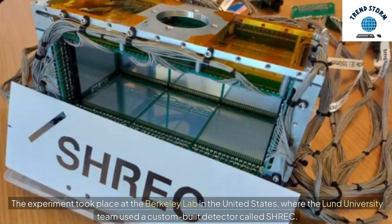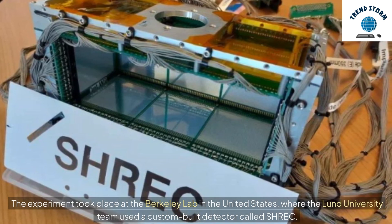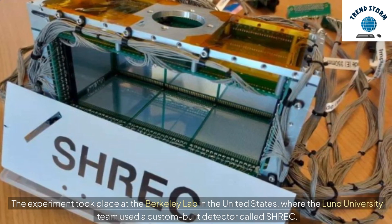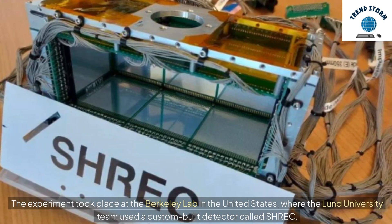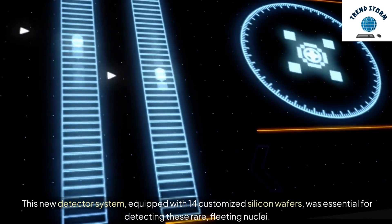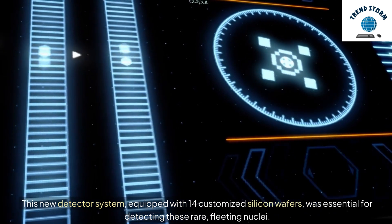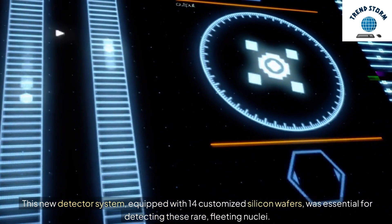The experiment took place at the Berkeley Lab in the United States, where the Lund University team used a custom-built detector called SHREC. This new detector system, equipped with 14 customized silicon wafers, was essential for detecting these rare, fleeting nuclei.